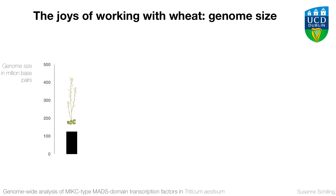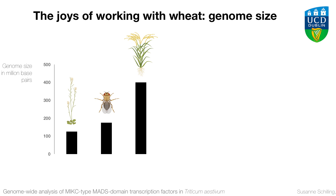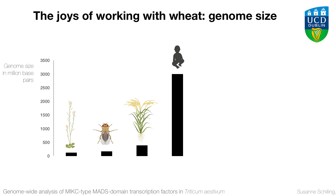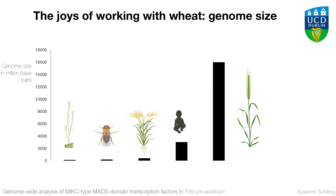Another challenge with wheat is that it has a very large genome. The Arabidopsis genome is pretty small with 120 megabases. Drosophila are only slightly larger. Rice is 400 megabases, still pretty manageable. The human genome is 3,000 megabases or 3 gigabases. But wheat dwarfs them all with 16 gigabases, and on top of that wheat also has a lot of transposable elements. So not the easiest species to work with.